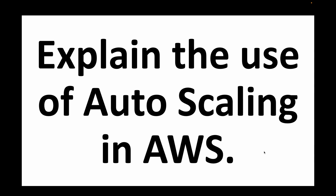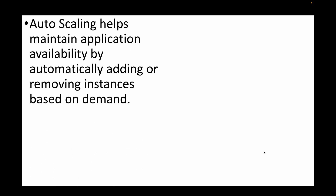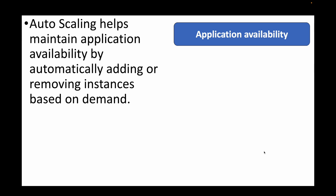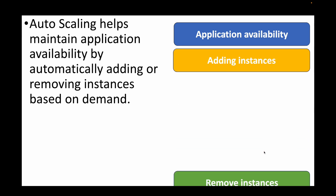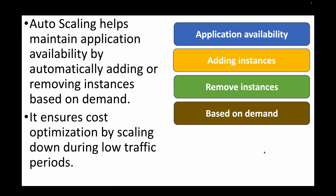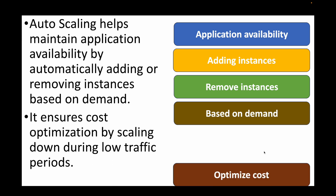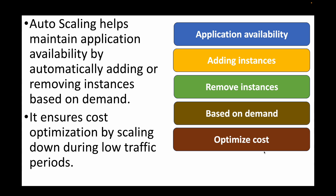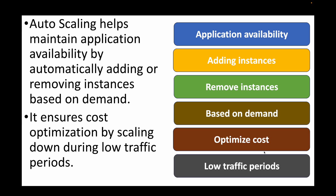The next question is: explain the use of auto scaling in AWS. Auto scaling is used when you want to scale in or scale out your EC2 instances, mainly to make your application highly available by automating the process of adding and removing instances based on demand. If demand is high, add more instances; if demand is low, remove them. This also ensures optimized cost, because your auto scaling group will launch instances only when actually needed.